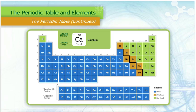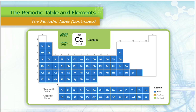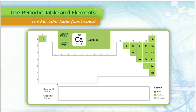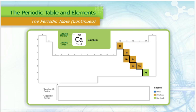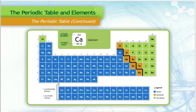Elements on the Periodic Table can also be divided into categories: metals, nonmetals, and metalloids. Metals are on the left side of the table. Common examples of metals are gold, silver, and iron.